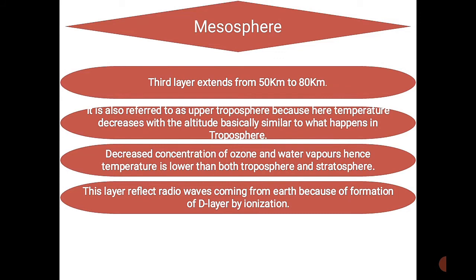The mesosphere is the third layer, extending from 50 kilometers to 80 kilometers. It is also referred to as the upper troposphere because temperature decreases with altitude here, similar to the troposphere. There is decreased concentration of ozone and water vapors. The temperature in the mesosphere is lower compared to the troposphere and stratosphere. This layer reflects radio waves coming from Earth due to the formation of the D-layer by ionization.